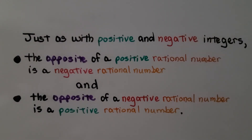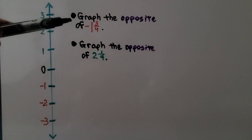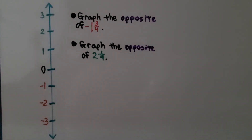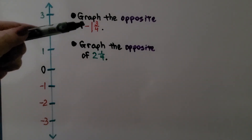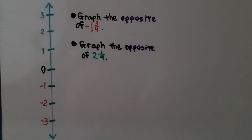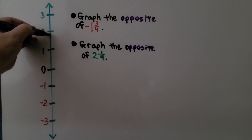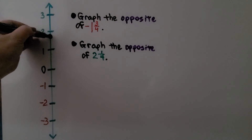Just as with positive and negative integers, the opposite of a positive rational number is a negative rational number, and the opposite of a negative rational number is a positive rational number. Here we have a vertical number line, and we need to graph the opposite of negative 1 and 3 fourths. The opposite is just positive 1 and 3 fourths. Here's 1, here would be 1 and 1 half, and this would be positive 1 and 3 fourths.